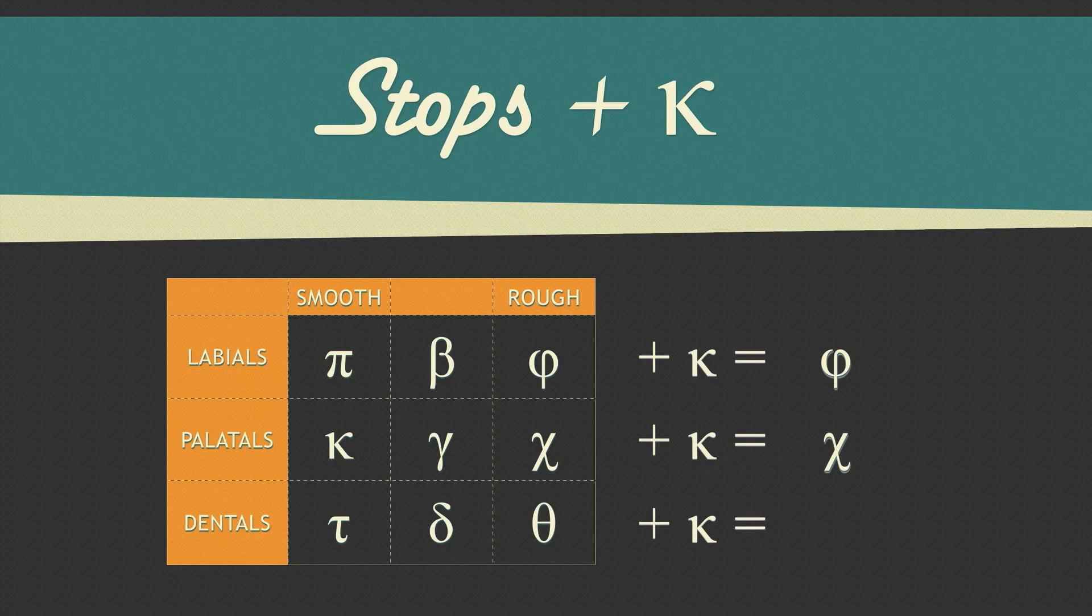For dentals, it acts just like a sigma in that the dental disappears and the kappa sticks around.